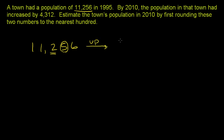If you round up to the nearest hundred, you get 11,000. Instead of having 256, we're rounding up to 300. 300 is closer to 256 than 200 is — that's why we're rounding up to that; that's why it's to the nearest hundred.